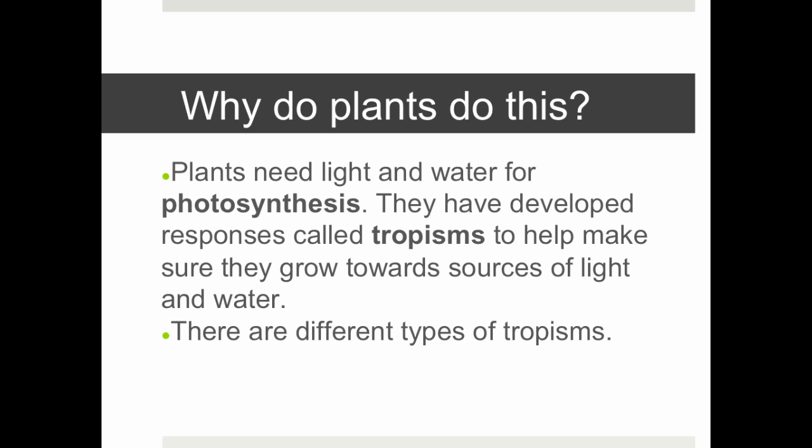Plants need light and water for photosynthesis, and they have developed a response called tropism to help make sure they can grow towards a source of light and water. So we're going to talk about the different types of tropism.